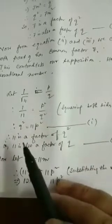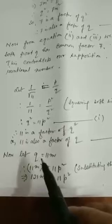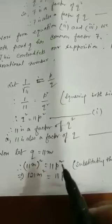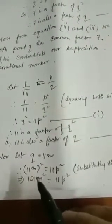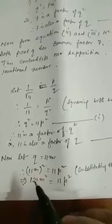Therefore 11 is a factor of q², so 11 is also a factor of q. Let this be equation 2. Now let q = 11m. Substituting the value of q into equation 1: (11m)² = 11p², which gives 121m² = 11p².